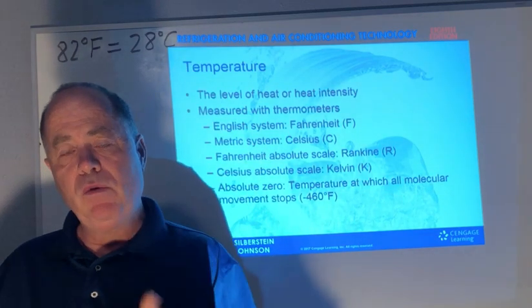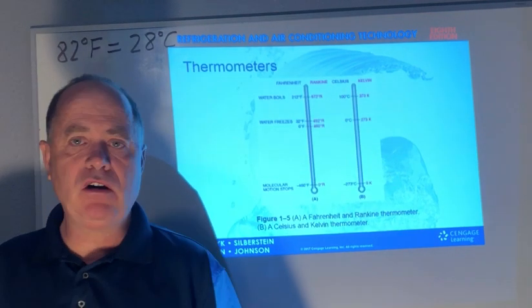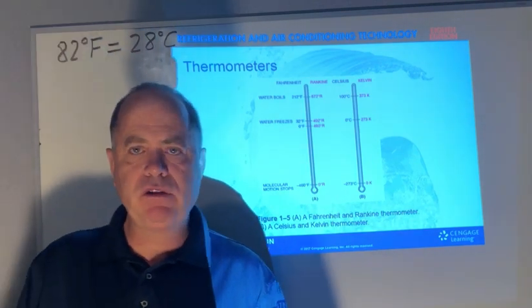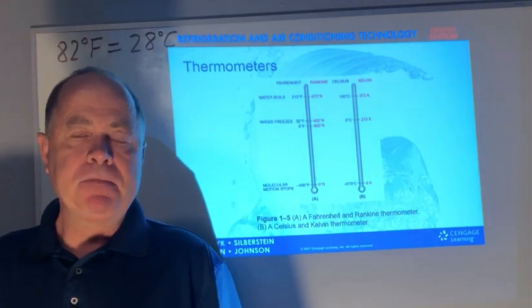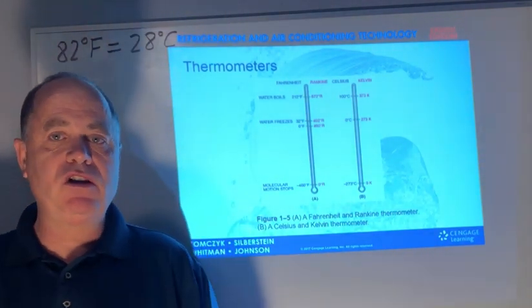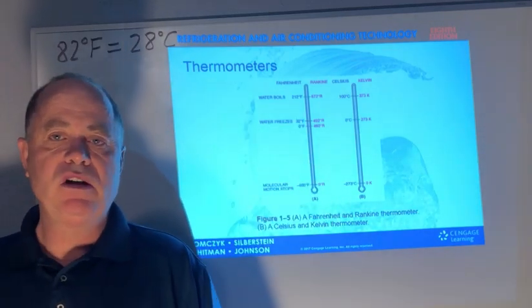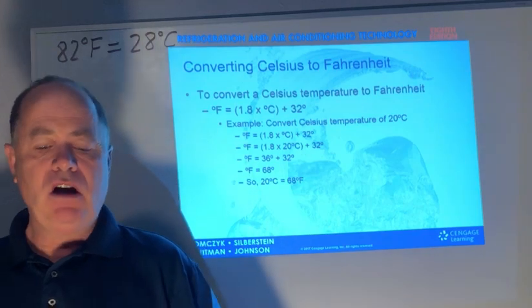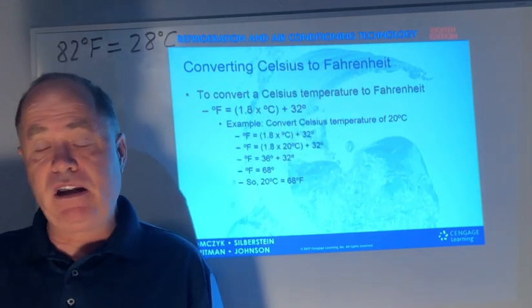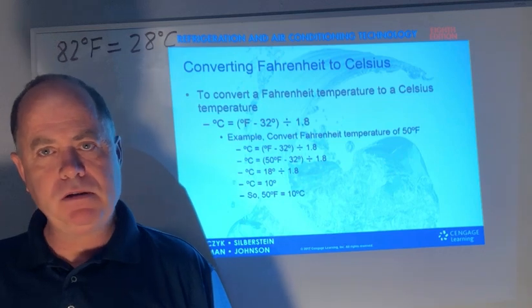We also have the absolute scales, which we're not going to deal much with. On the Celsius versus Fahrenheit chart, water at sea level at atmospheric pressure boils at 212 degrees Fahrenheit or 100 degrees Celsius. Water freezes at 32 degrees Fahrenheit and zero degrees Celsius. So we have three reference points: 82/28, 212/100, and 32/0. There are formulas to convert between Fahrenheit and Celsius, but in the trade we don't have to do that very often — and if we did, there's an app for that.